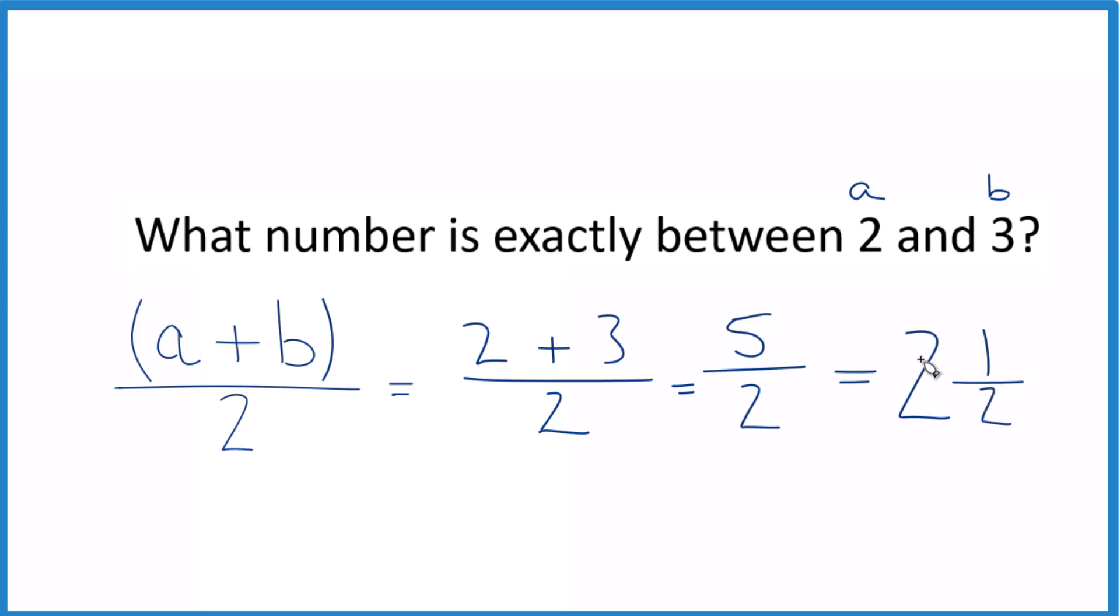You can check that. 2 times 2 is 4 plus 1. That gives us the 5, and then we just keep the 2. At the denominator, we keep that the same.